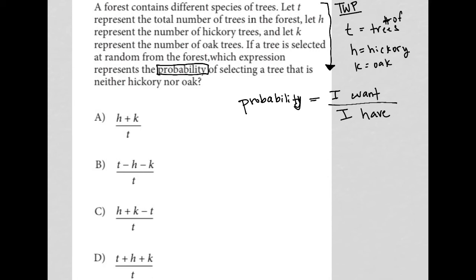All right. So what are we finding the probability of? If a tree is selected at random from the forest, which expression represents the probability of selecting a tree that is neither hickory nor oak? So what do I want? I want a tree that is neither hickory or oak. So all the trees in a forest are T. I need to subtract from that the hickory trees. I need to subtract from that the oak trees. And then I'm choosing out of what I have, which is the entire forest, which is T. Hopefully that makes sense.